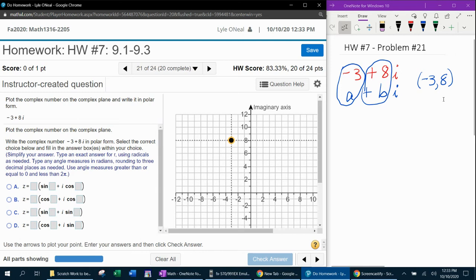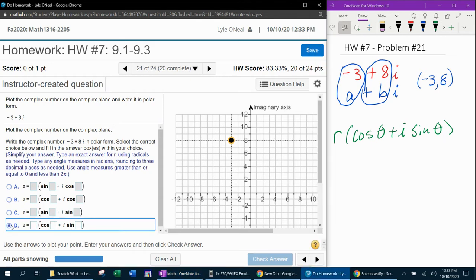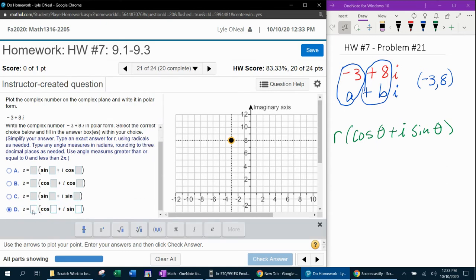Now what I need to do is convert to polar form. And the polar form is R cosine theta plus i sine theta. That is the polar form of a complex number. And if I go choose the appropriate answer over here, the one that's in the correct format, it looks like that's going to be answer choice D. R cosine theta plus i sine theta. And then all I need to do is calculate R and theta.